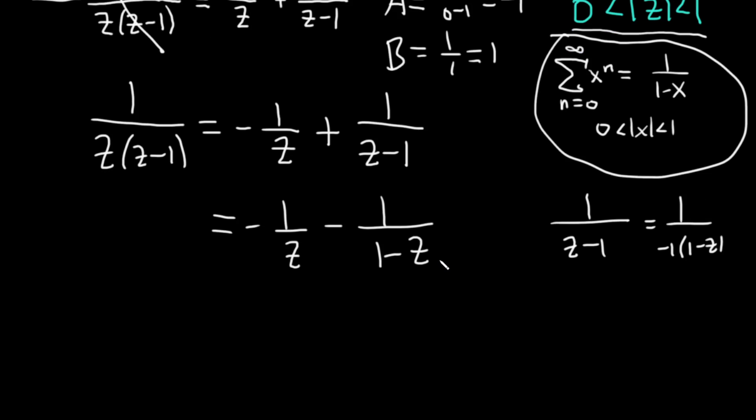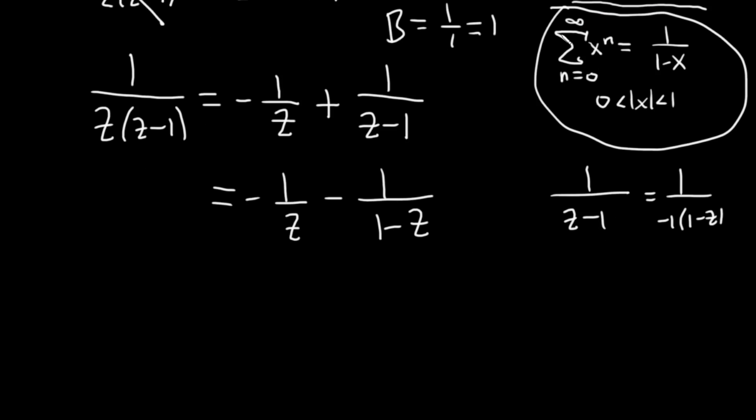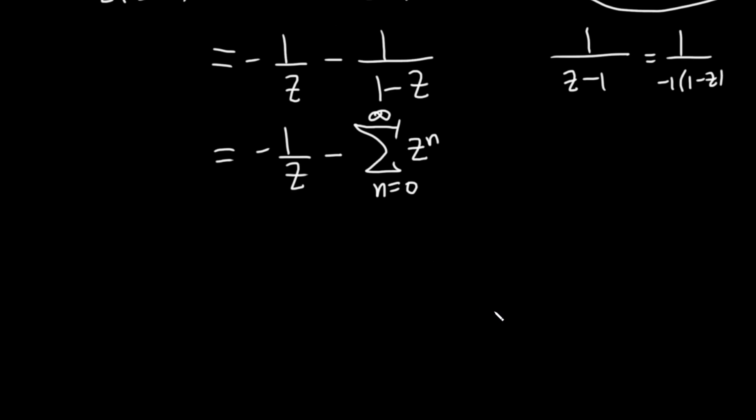So now we can invoke this formula here. So this is negative 1 over z minus, and then the sum here starts at 0, 0 to infinity, z to the n. And that would be the Laurent series.